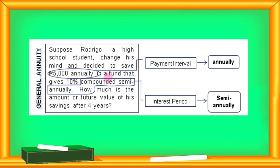For the general annuity, take a look at the difference. Suppose Rodrigo, a high school student, changed his mind and decided to save P5,000 annually in a fund that gives 10% compounded semi-annually. How much is the future value of his savings after 4 years? The payment interval is still P5,000 yearly or annually, but the interest rate period is compounded semi-annually. Since annually and semi-annually are not the same, we have a general annuity.